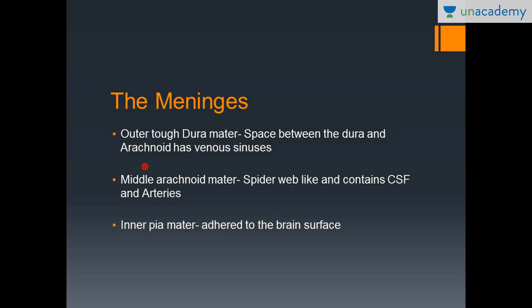The brain is protected by a number of structures. First is the skull, also called the cranium. Starting from the outside: we have the skin, then the skull bone, then the dura mater. The dura mater is the outer tough layer and is the first of the three meninges.